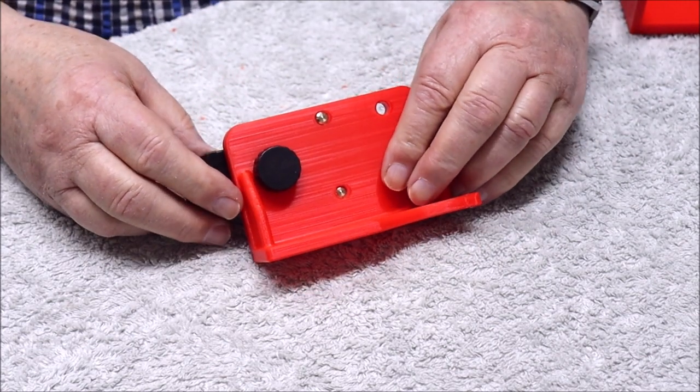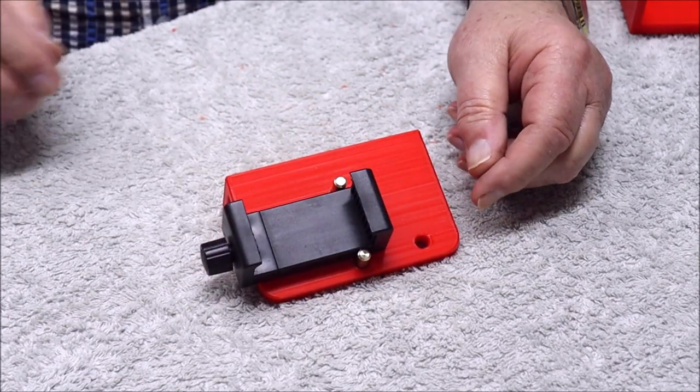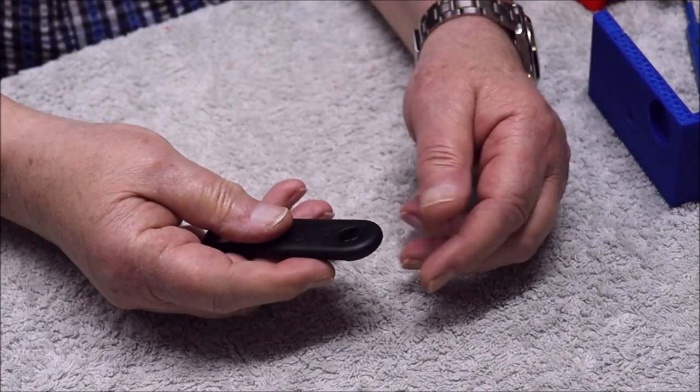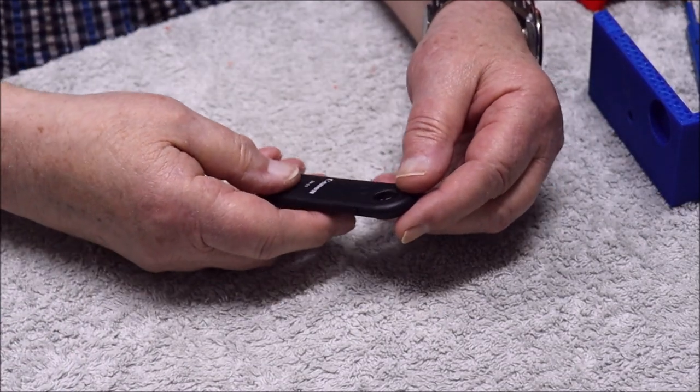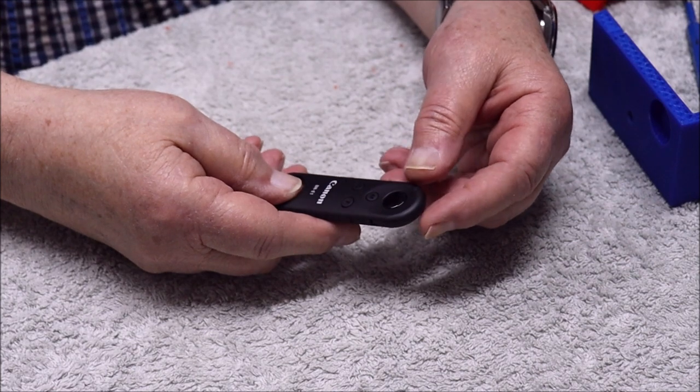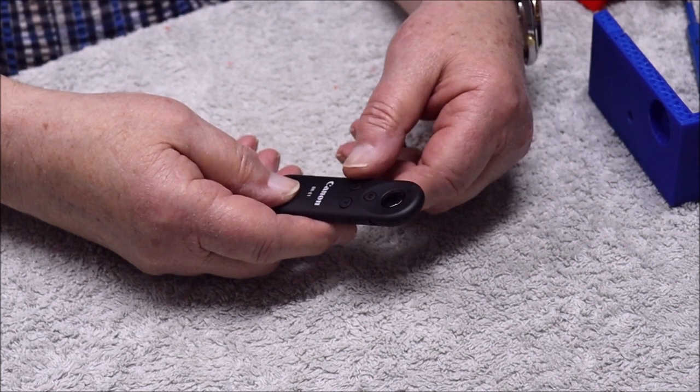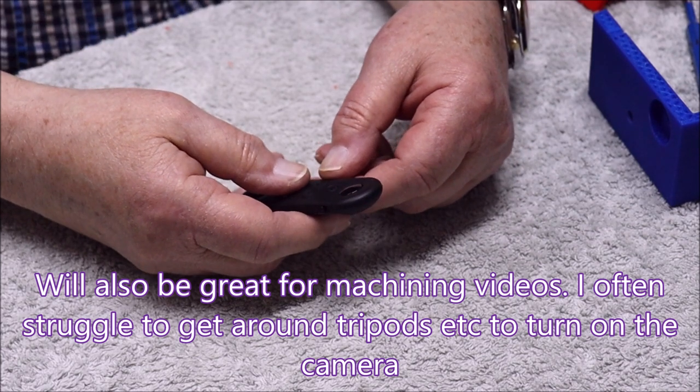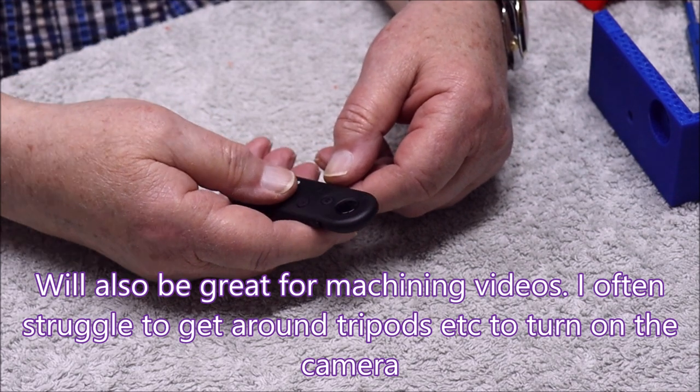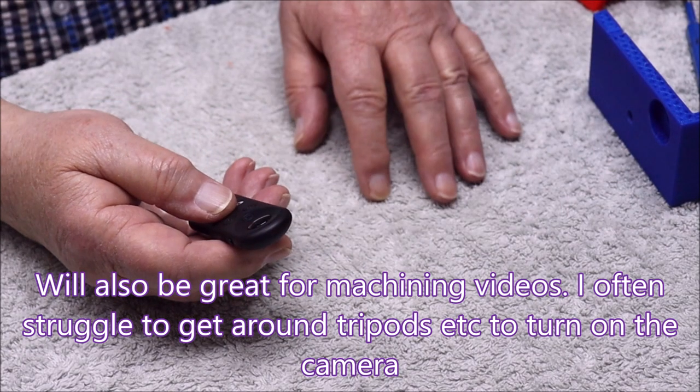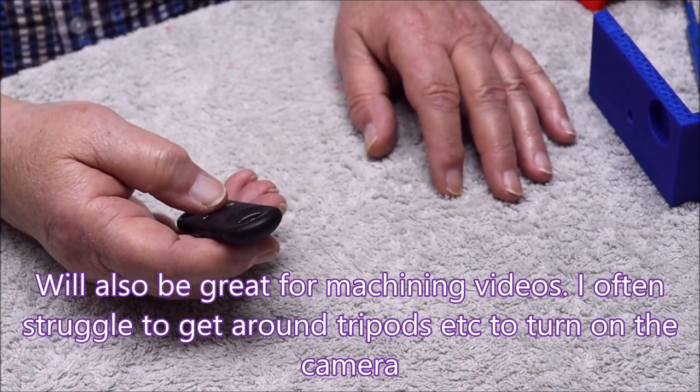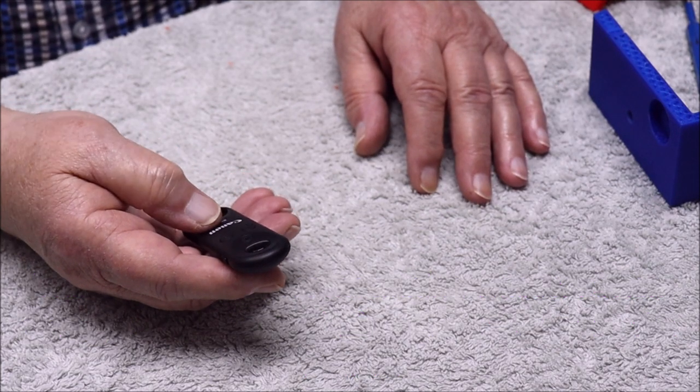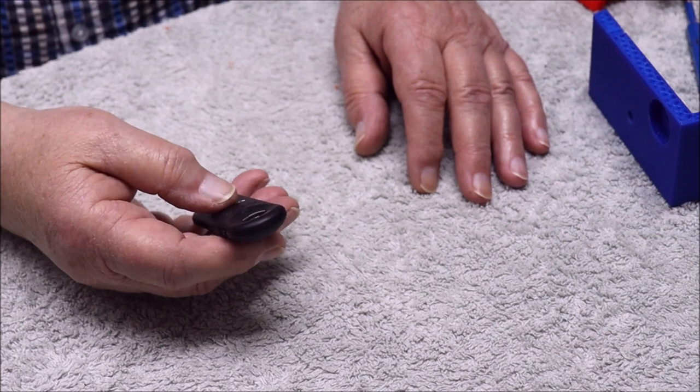So now I'll go fit it to the lathe and see what happens. This little device here is a Canon BR-E1 remote control, Bluetooth remote control for my camera, and it makes life so much easier when you're doing tabletop stuff like this because I can just turn the camera on and off as I please. It was easy to connect up and it works really well.